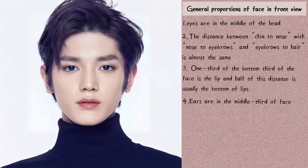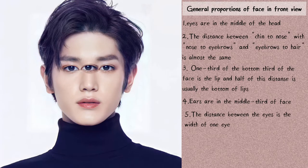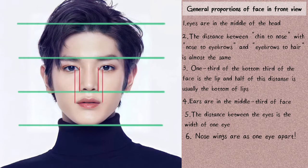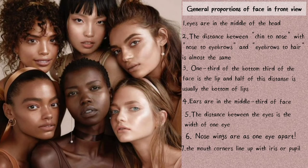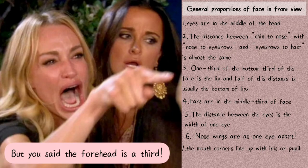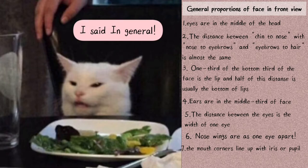The distance between the eyes is about the width of one eye, and that's also the distance of the nose wings from each other — so they usually line up with the tear ducts. If we draw a line from the iris down to the lip line, we can find the corner of the mouth. Keep in mind that these measurements are averages; people are different and it's our job to distinguish and draw those unique characteristics based on this framework.